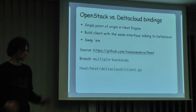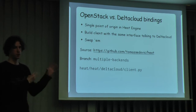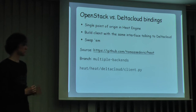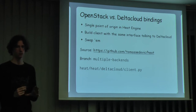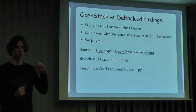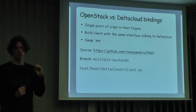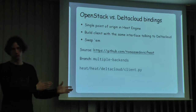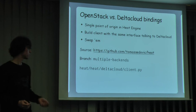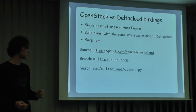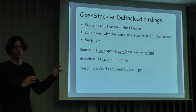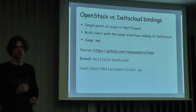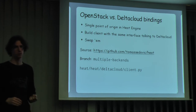Once we had the DeltaCloud client, we needed to integrate it with HEAT. The good thing about the HEAT codebase that surprised me was that there was essentially a single file and a single function that returned an object with all the OpenStack API calls. So we could just swap that out with something that provides the same interface but talks to DeltaCloud, and we're done. This is a fork of HEAT. Right now it's just hard-coded, but later on we'd like it to be configurable.